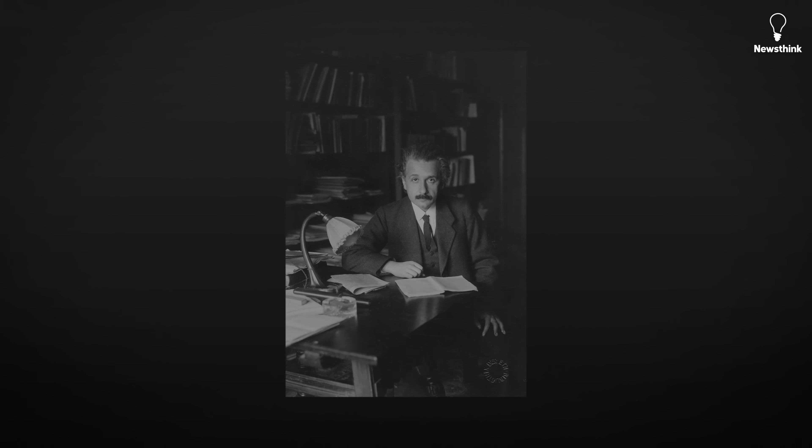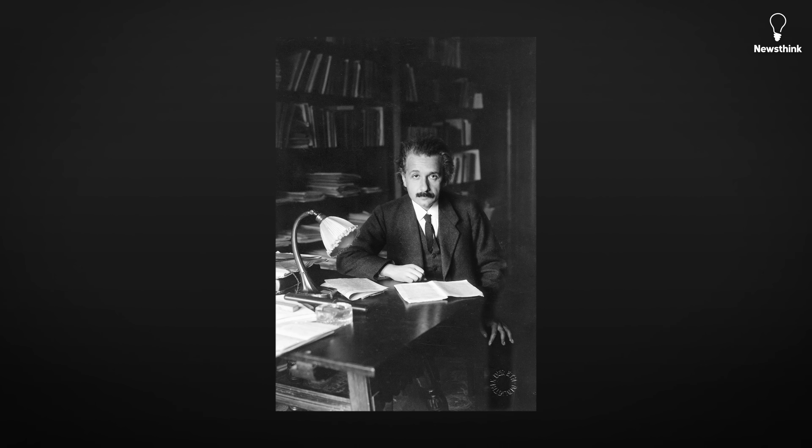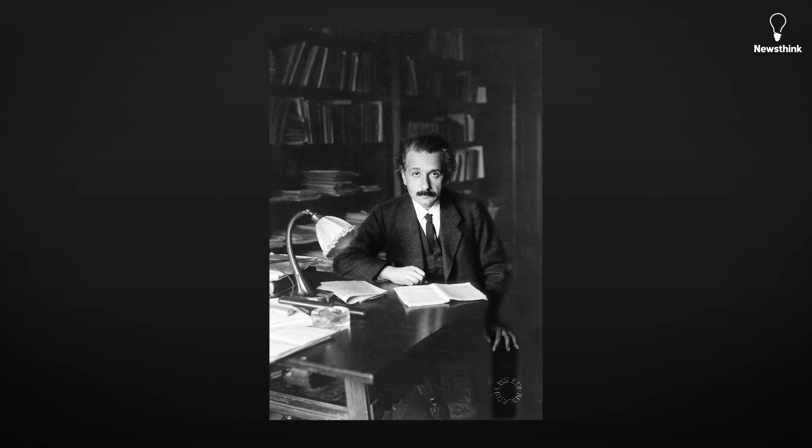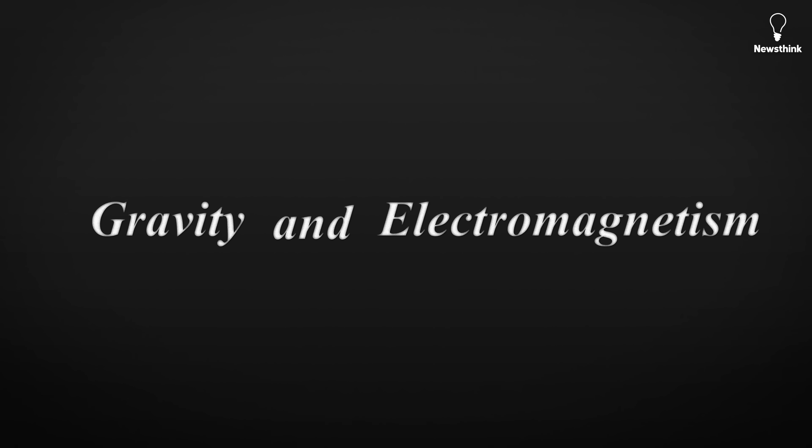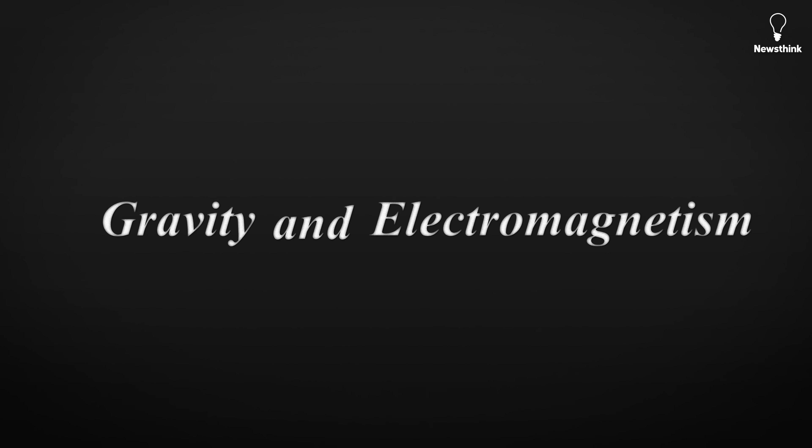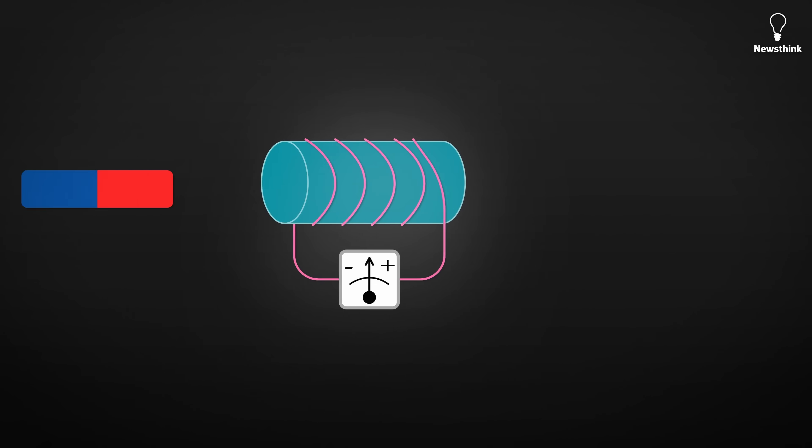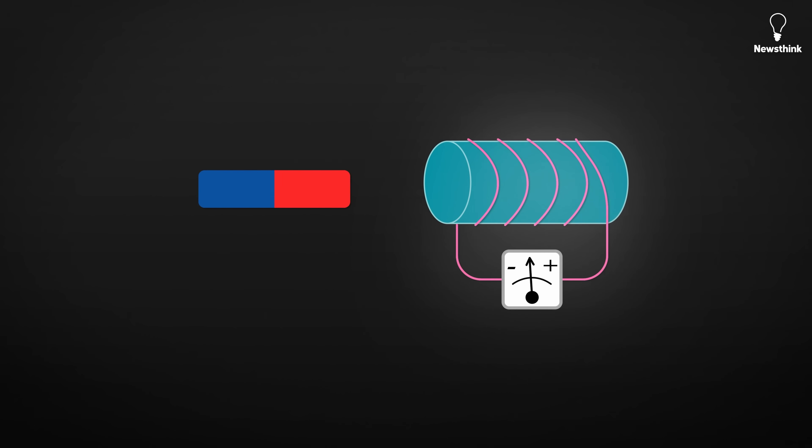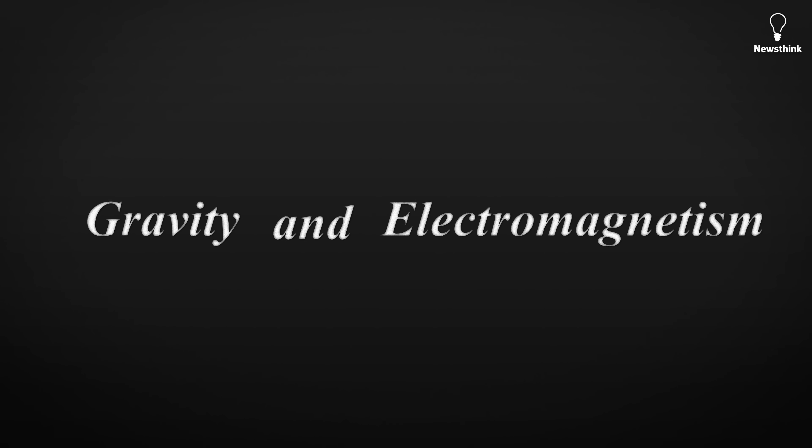Einstein began working on a unified field theory in the 1920s, trying to tie together the only two known forces at the time, gravity and electromagnetism. Electromagnetism is the force that unites electricity and magnetism. Moving electric charges create magnetic fields, and changing magnetic fields generate electric currents. He couldn't accept that they had no connection.